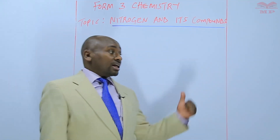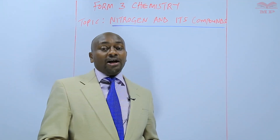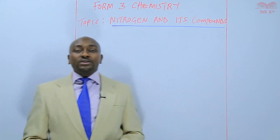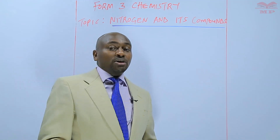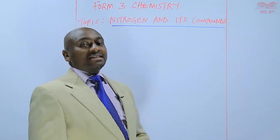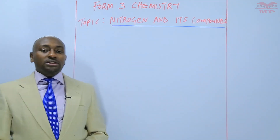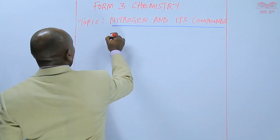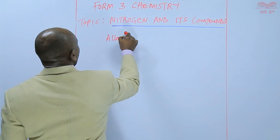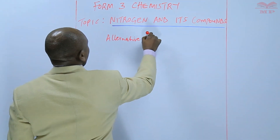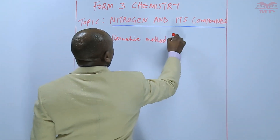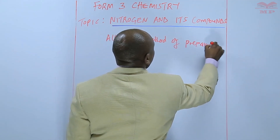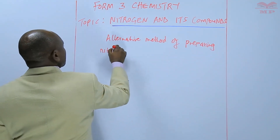In our case, we will prefer using lead 2 nitrate. The reason why we prefer using lead 2 nitrate is because it is not hydrated — it doesn't contain water of crystallization. So this is the alternative method of preparing nitrogen dioxide.